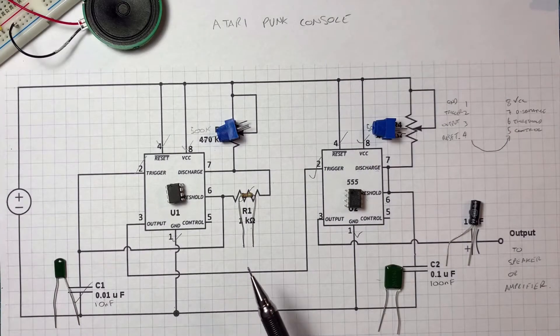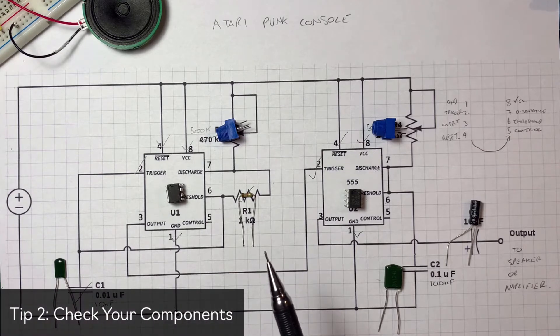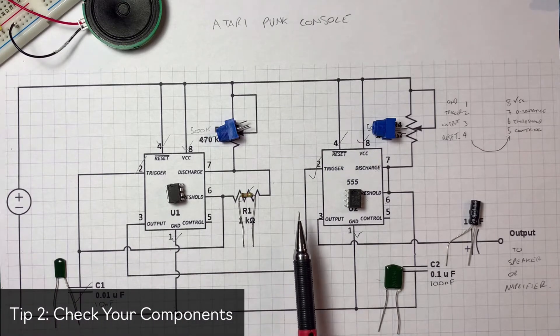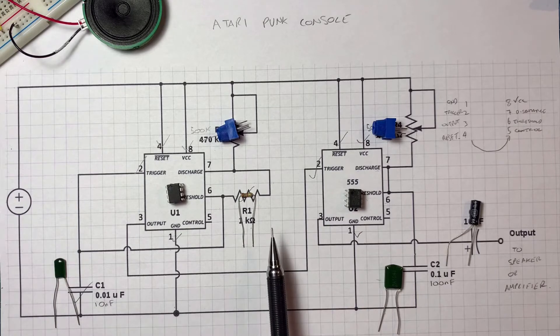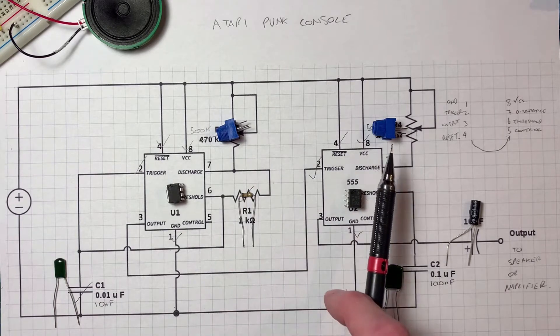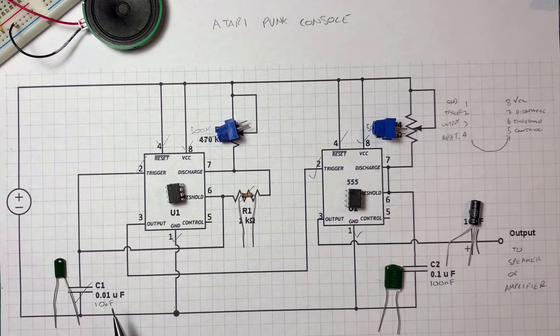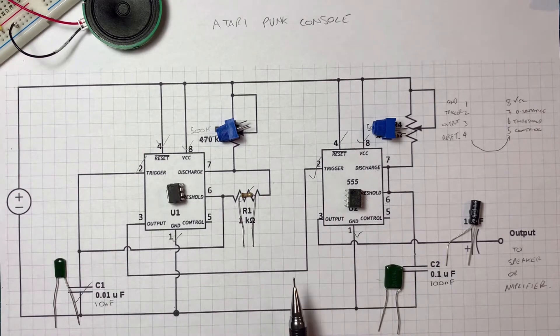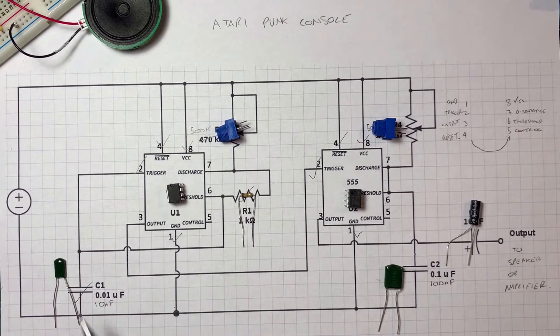My second tip is to print or draw the schematic out and then lay all your components on the particular places on the schematic. When you're first learning how to breadboard, this ensures that you've got all the components you need to create the circuit and you haven't missed anything. You can also double check and make sure your values are correct.